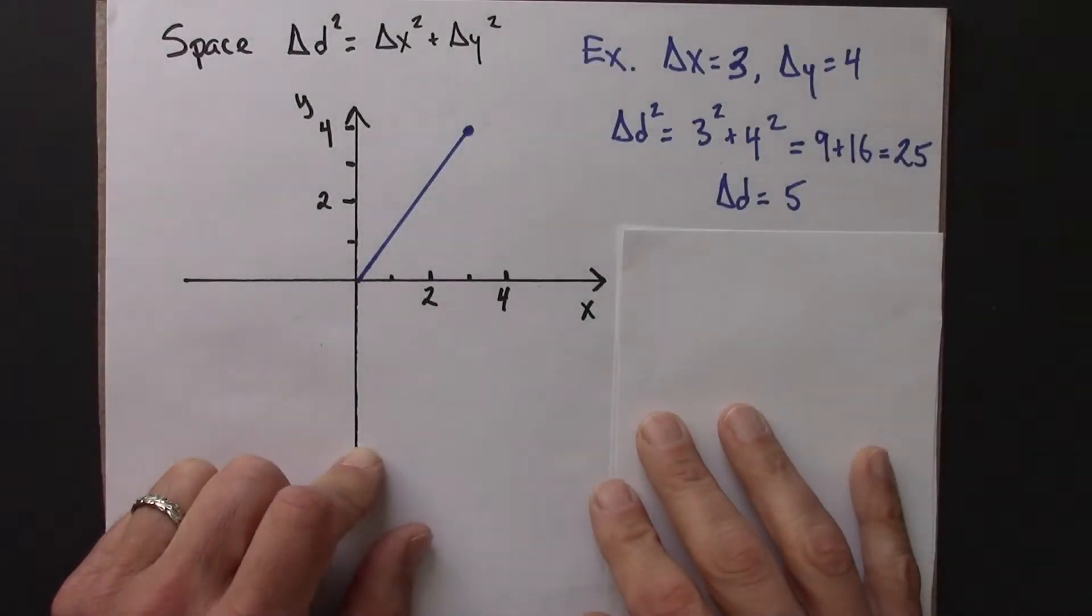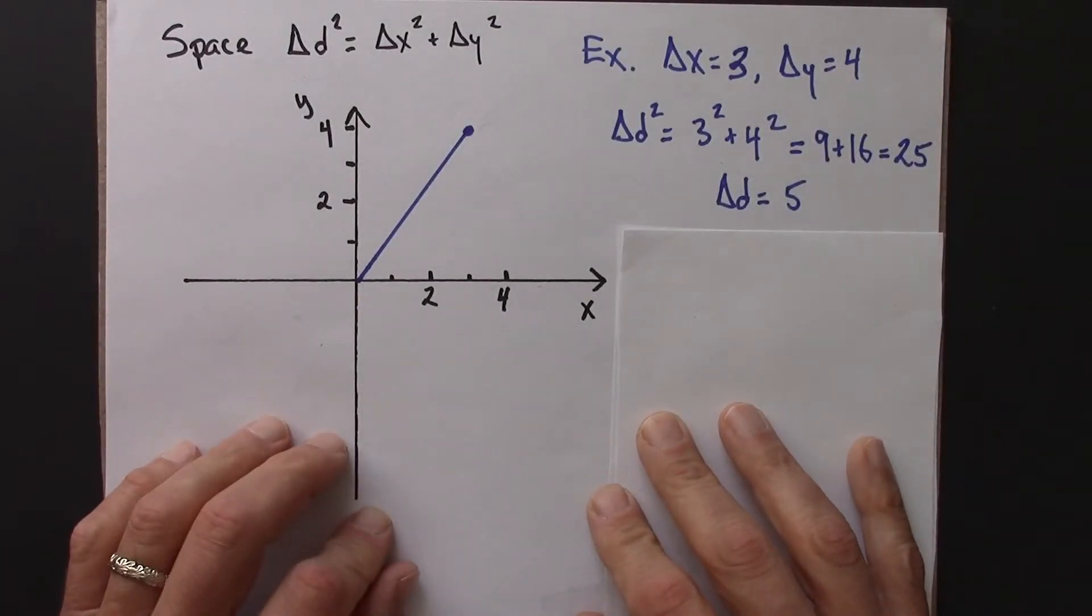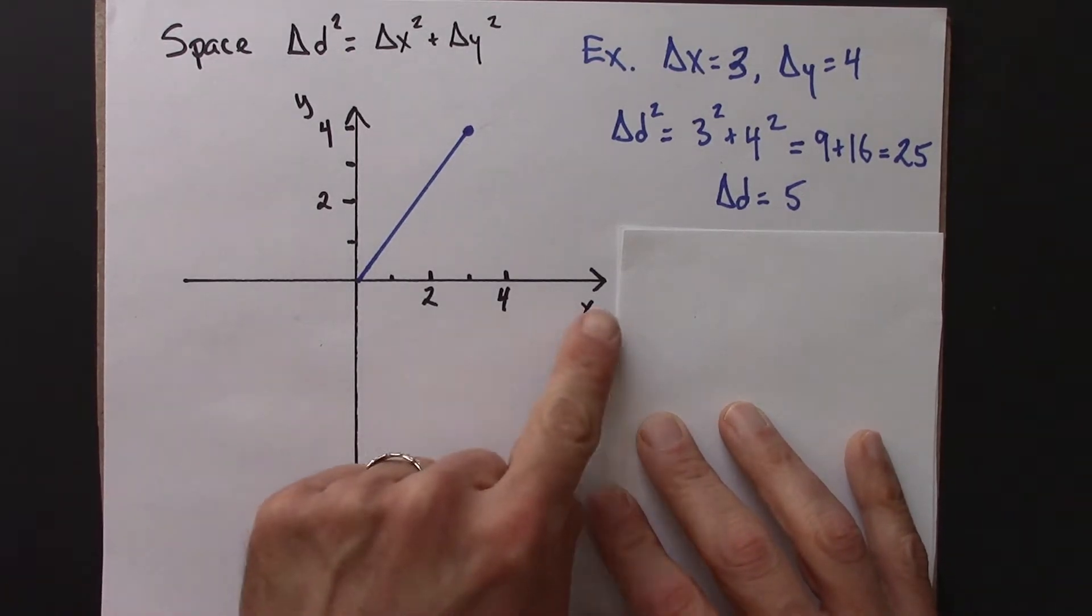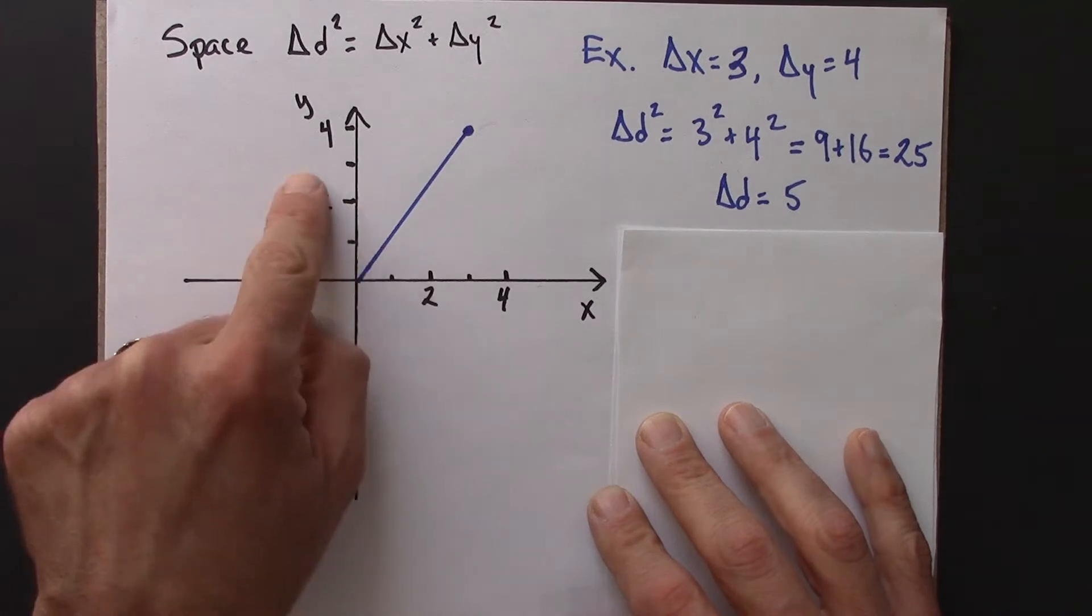We'll get started by thinking about geometry and spacetime. So let's get going. Let's start, as we often do, by thinking about space instead of spacetime. So these are x and y, not x and t.